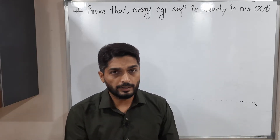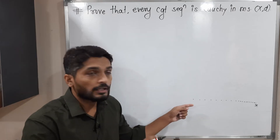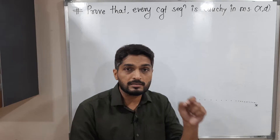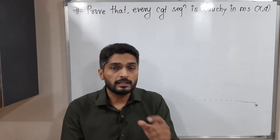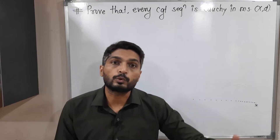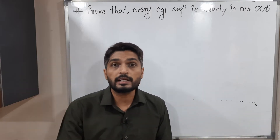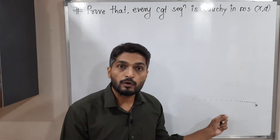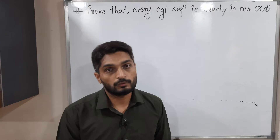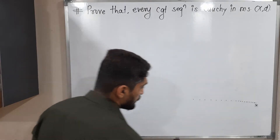In the case of a convergent sequence, if infinitely many terms are moving towards a single point, then obviously the distance between successive terms will reduce and go to zero. That means the nature of a Cauchy sequence will definitely appear in a convergent sequence. But we have to prove this mathematically.